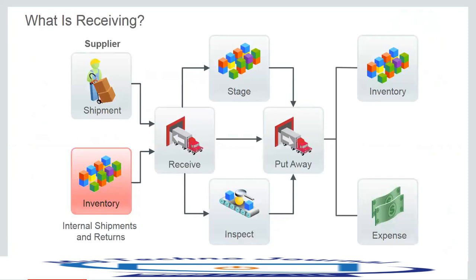Receiving is a process that signals that the goods ordered on a purchase order, transfer order, customer return, and so forth have arrived. Oracle Fusion Receiving enables you to control the items you order through receiving, inspections, and put away. We can define the receiving tolerances and rules at the organization, supplier, item, and order level.